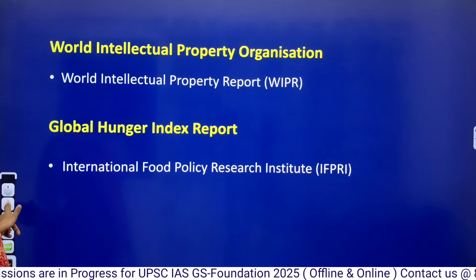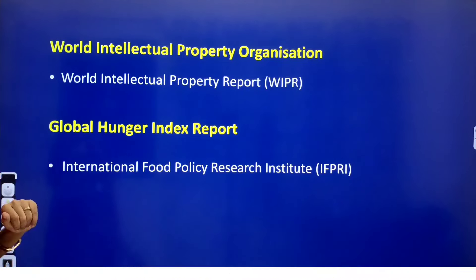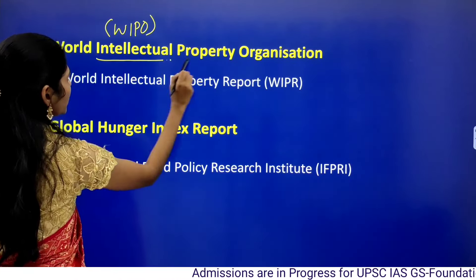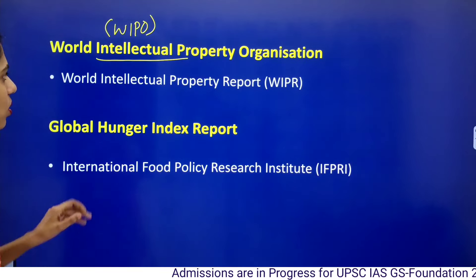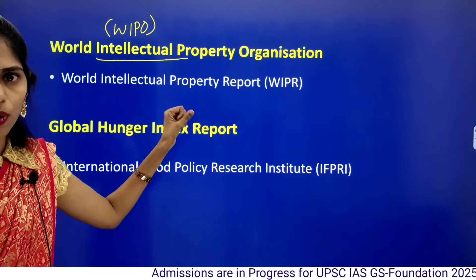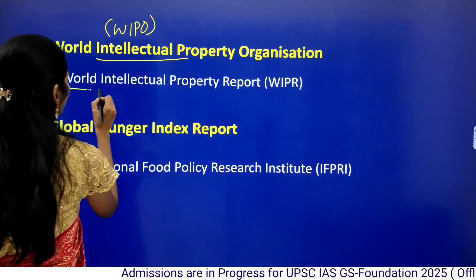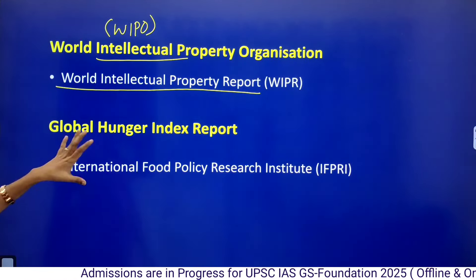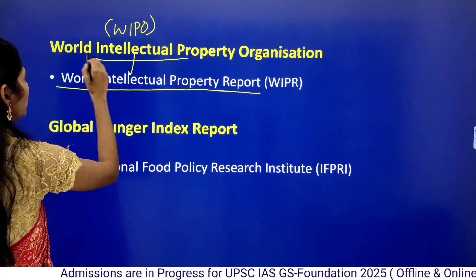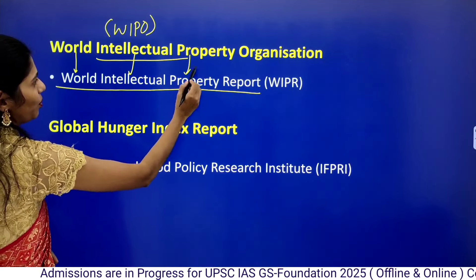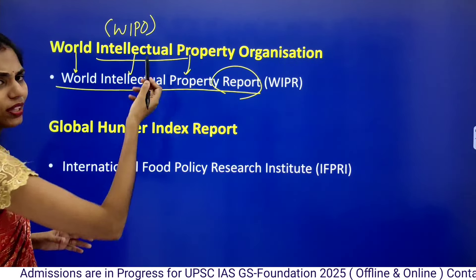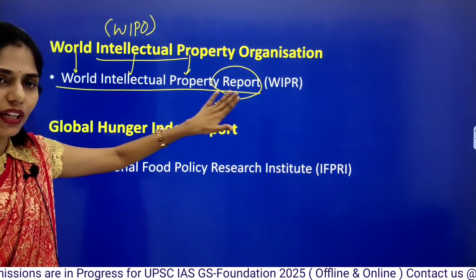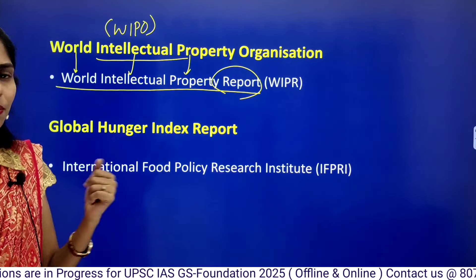Next is WIPO — World Intellectual Property Organization. It releases the World Intellectual Property Report. The name is easy to remember since the organization and the report share similar names — World, Intellectual, Property — just add 'Report' at the end.